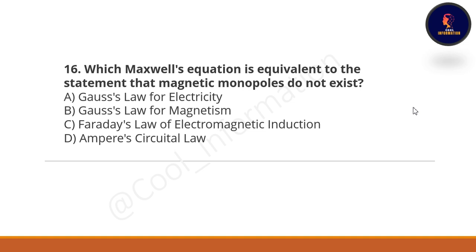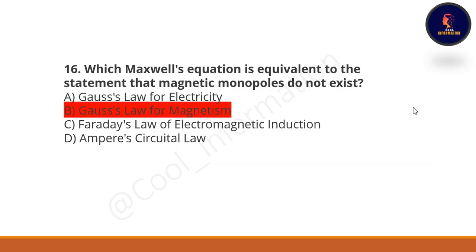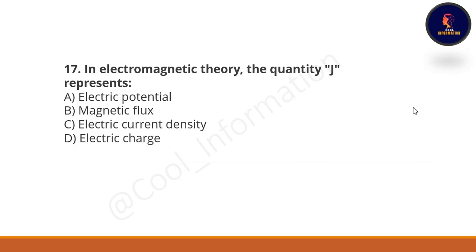Next question: which Maxwell equation is equivalent to the statement that magnetic monopoles do not exist? Option A: Gauss's law of electricity. Option B: Gauss's law of magnetism. Option C: Faraday's law of electromagnetic induction. Option D: Ampere's circuital law. The correct option is Gauss's law of magnetism.